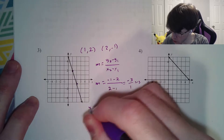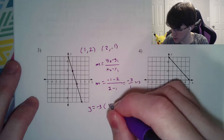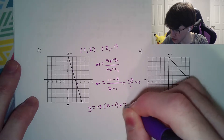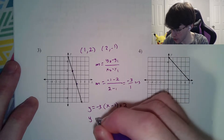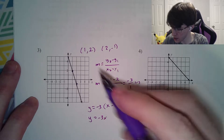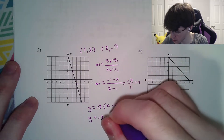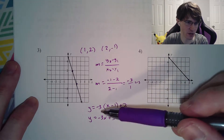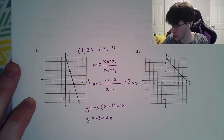Continuing on, creating our equation: y equals negative 3 times x minus 1, plus 2. There's our point-slope form. Our slope-intercept form will be negative 3x, and it looks like it crosses through 5, so plus 5. You could have gotten that 5 by doing negative 3 times negative 1, that's positive 3, adding 2 is 5.